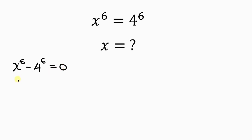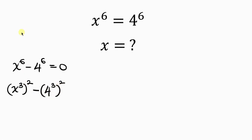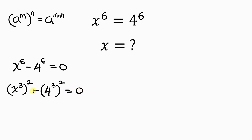Our next step will be to write this in terms of difference of two squares. That means x to the 6 can be written as x cubed raised to the power of 2, minus 4 to the 6 which is the same as 4 cubed raised to the power of 2. This validates the law of indices which says a to the m raised to the n equals a to the m times n. So 3 times 2 gives back 6, confirming this is correct, equal to 0. We have been able to write this in terms of difference of two squares.